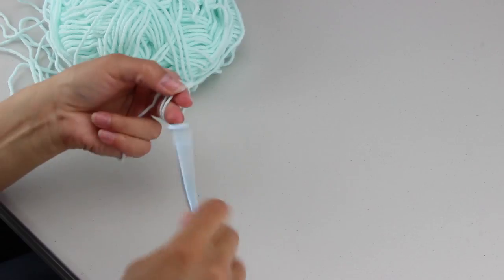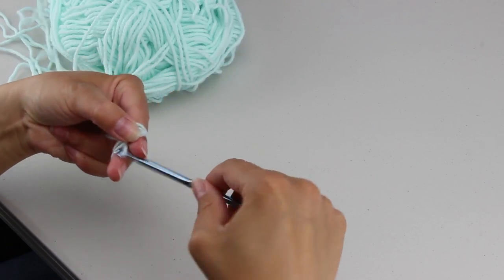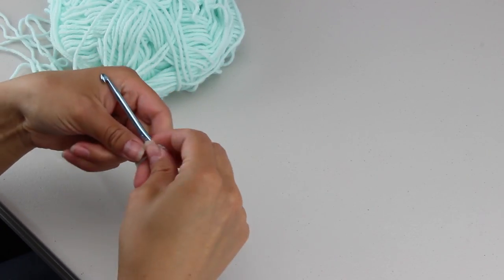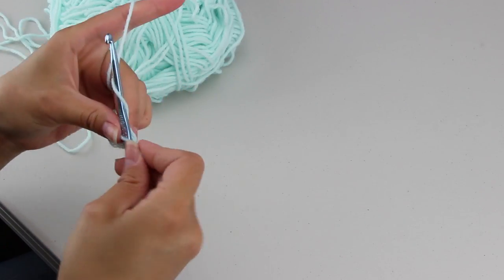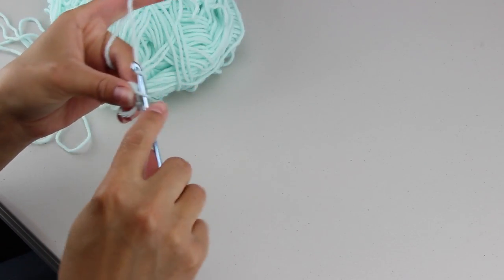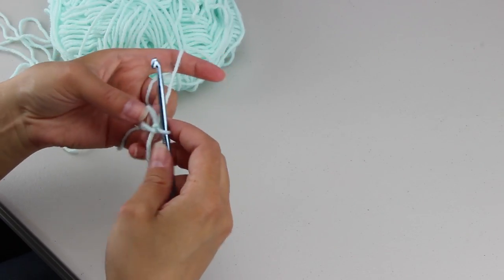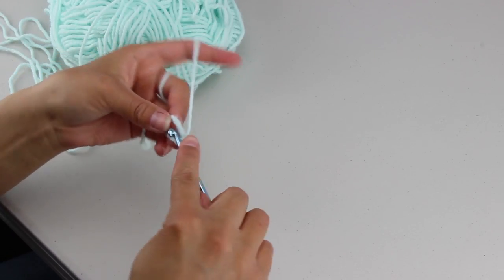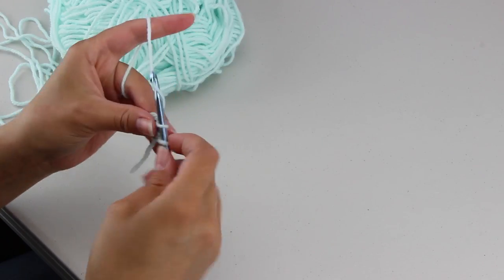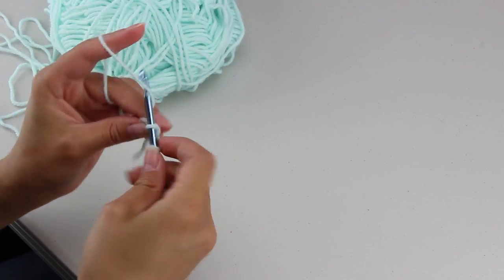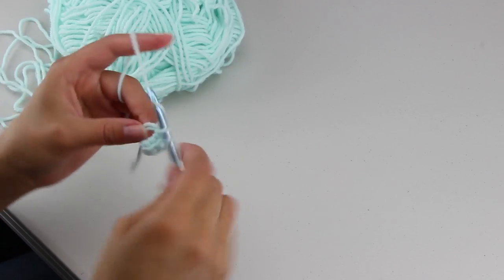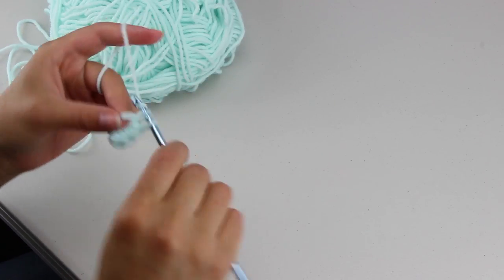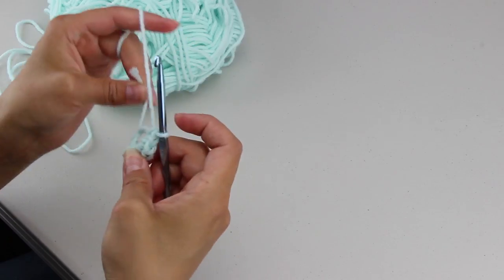So I'm going to start with a magic ring and then I'm going to work 5 single crochets into the middle. I'm going to tighten down my ring.